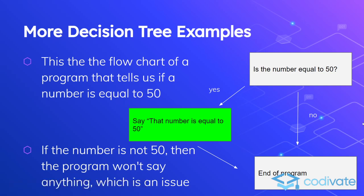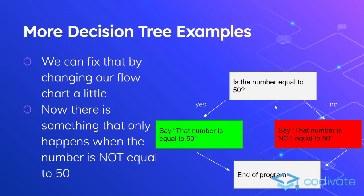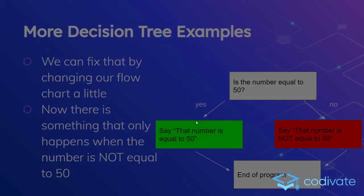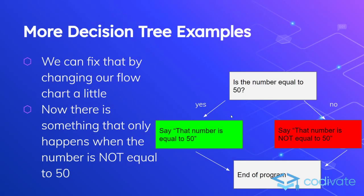Now there's something slightly different. Instead of just skipping, instead of just deciding whether or not we do the green thing, we're now deciding whether we do the green thing or something else entirely. In this case, 'say the number is equal to 50' is the yes, and 'say the number is not equal to 50' is the no. Either way, regardless of which one it does, they come back to the same place — they branch out, but then they come back.